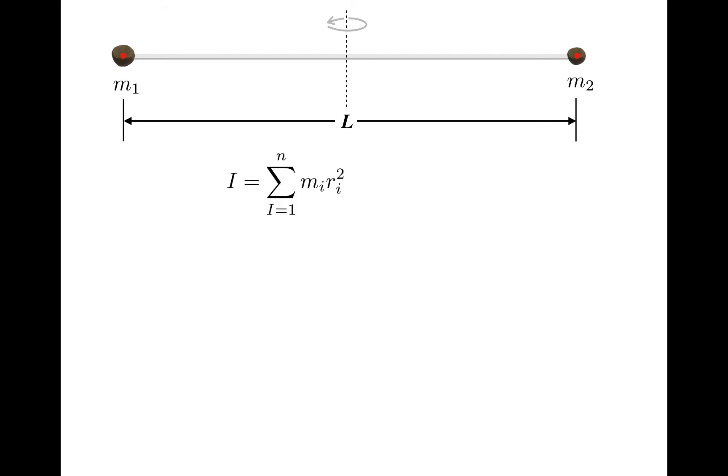The rotational inertia is just going to be the sum of the rotational inertias of each of the blobs of clay. So for this configuration, the rotational inertia is m1 times L over 2 squared, plus m2 times L over 2 squared. And simplifying a bit, we get that the rotational inertia is the quantity m1 plus m2 times L squared over 4.